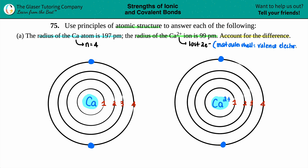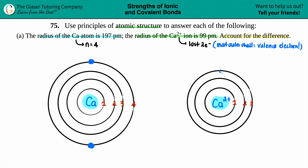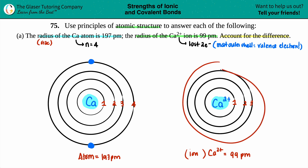Calcium has two valence electrons, so one has to go — goodbye — and then the second one has to go — goodbye. As you can see, there are now no electrons in the fourth shell. So does calcium have that fourth n value anymore? No — goodbye. Now it only has electrons up through n equals 3. The size of the calcium atom is 197 picometers, but the size of the Ca2+ ion is only 99 picometers, because you lost the last subshell.